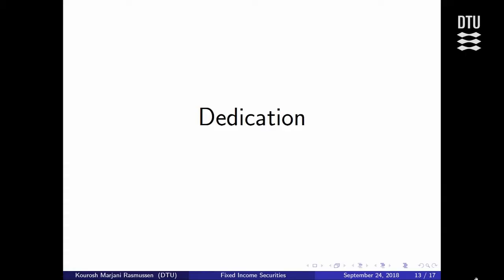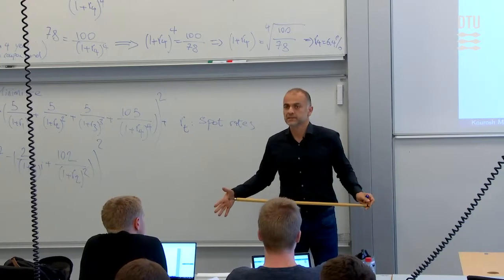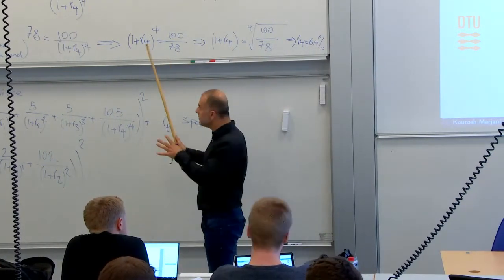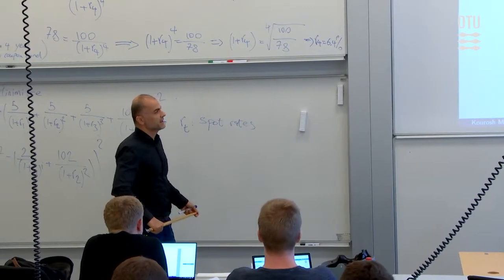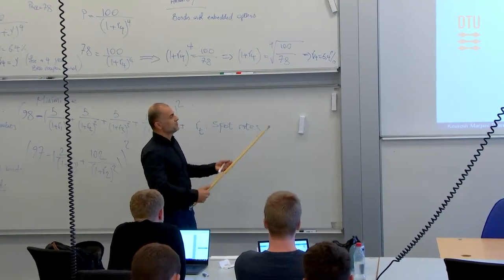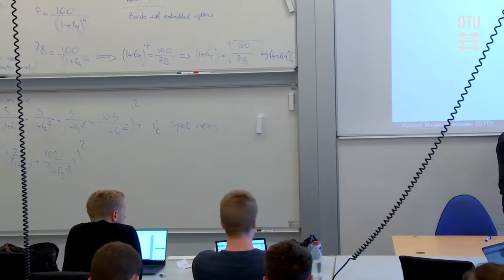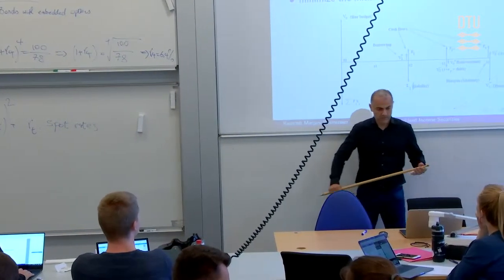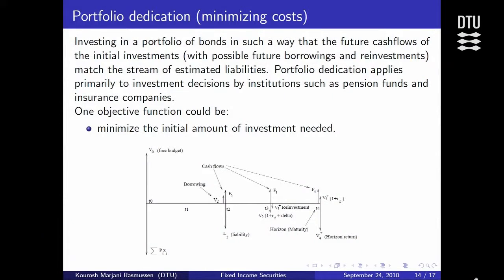We're now getting into the final lecture of today, which is on Dedication — the first optimization model I'm going to introduce in this course for risk management in the bond markets. I've introduced enough topics to prepare us for the Dedication model. We start with very simple assumptions, and I'll get back next week to explain why this framework is simplistic and why you might need to bring in stochasticity. But we start with the simple case to understand the dynamics of what Dedication means.